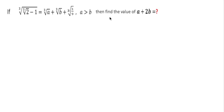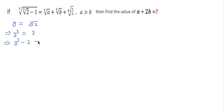If you want to try to solve this then you can proceed, otherwise I am going to solve this. To solve, first I will consider y equal to cube root of 2, then cube both sides: y³ = 2. Subtract 1 from both sides, and 1 can be written as 1³. So using the a³ minus b³ formula we can write (y minus 1)(y² plus y plus 1) equal to 1.